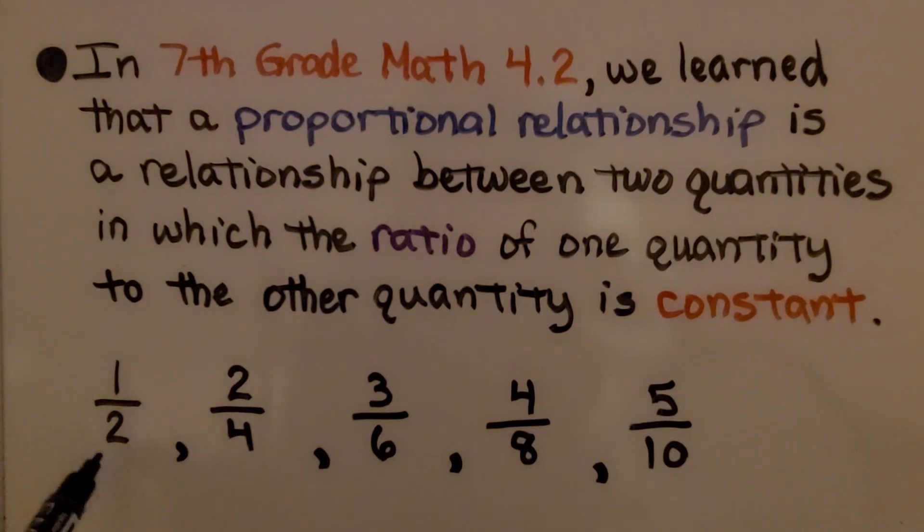Just like this 1 half. Two times this numerator is 4, two times this numerator is 6, two times this numerator is 8. It's a constant change.